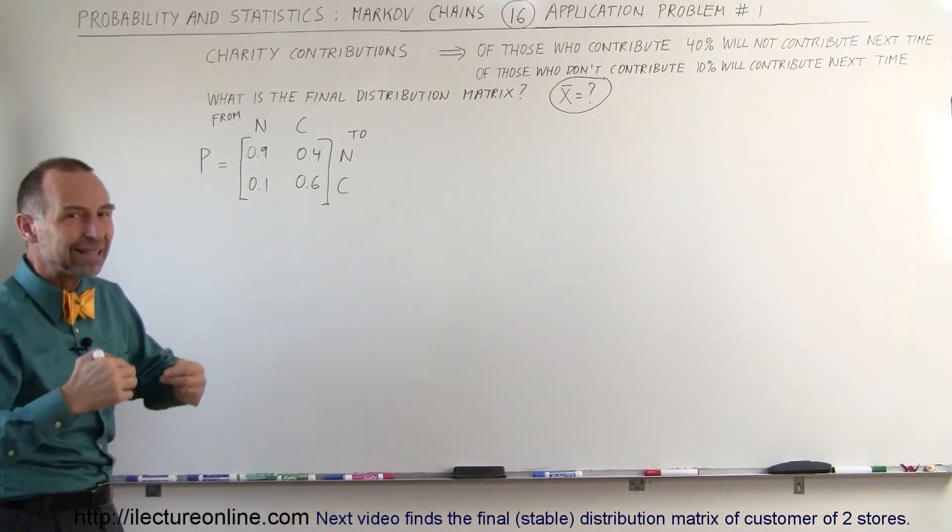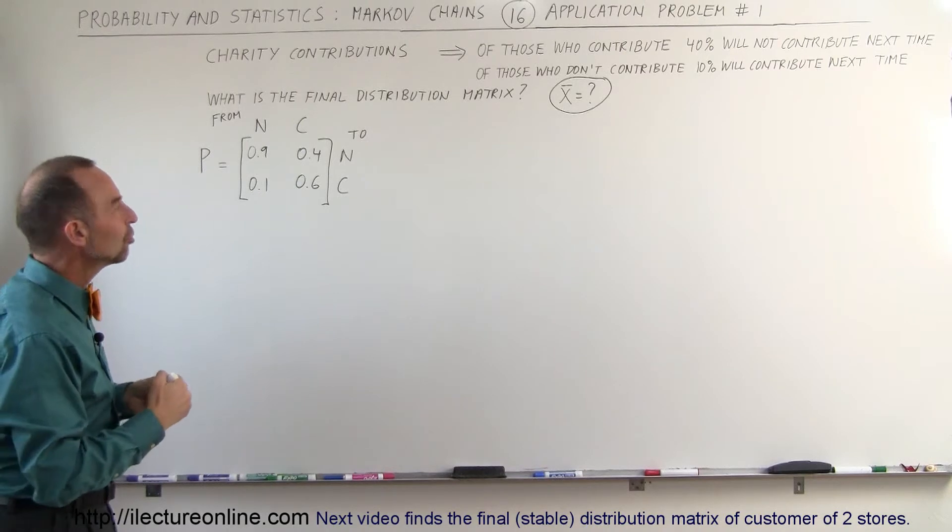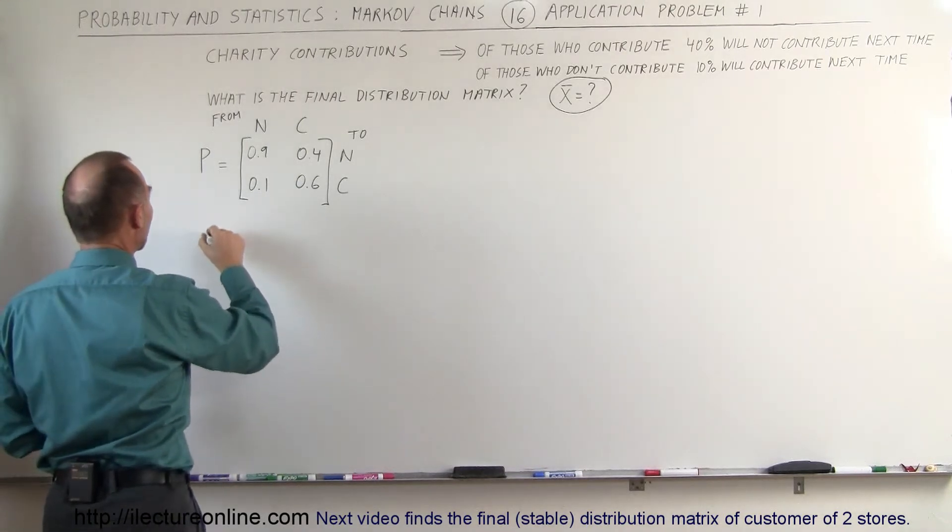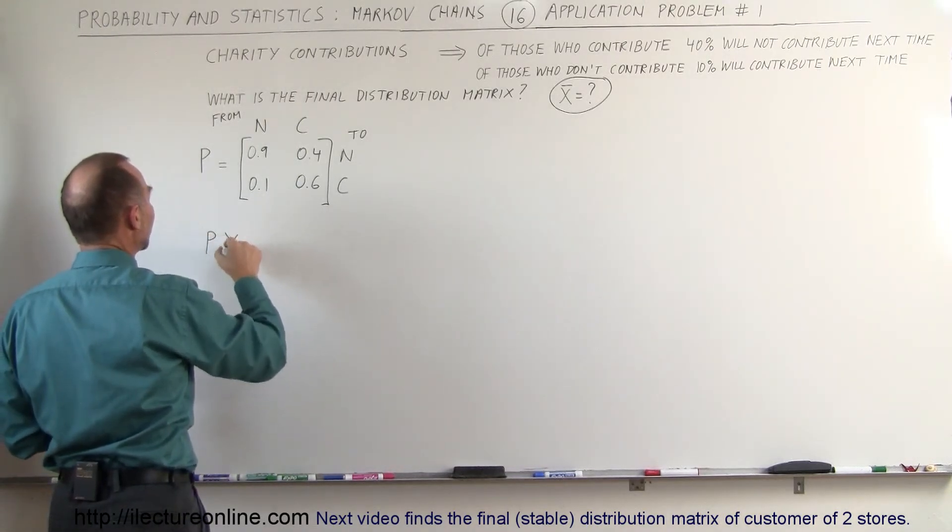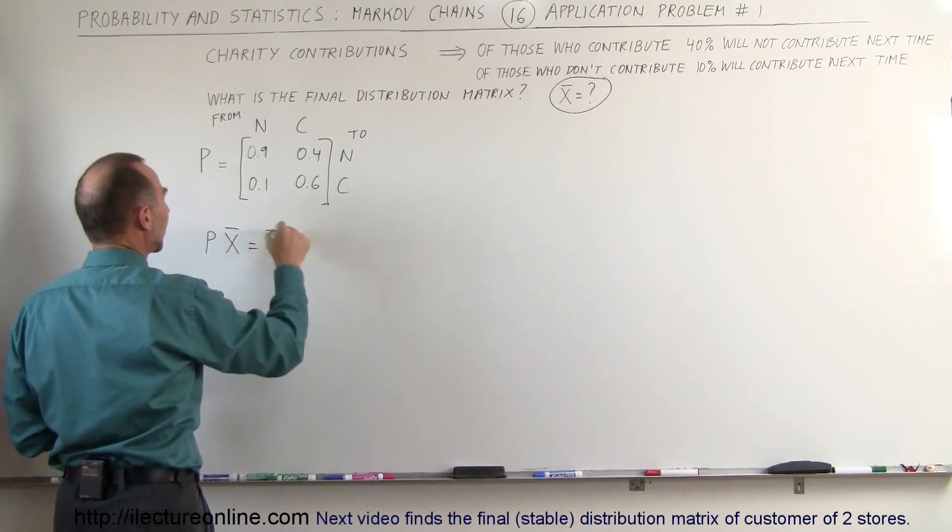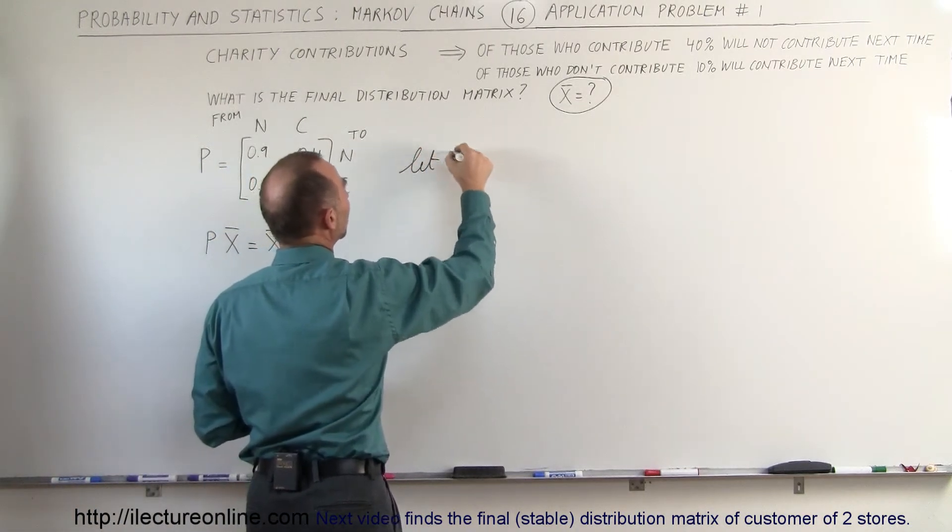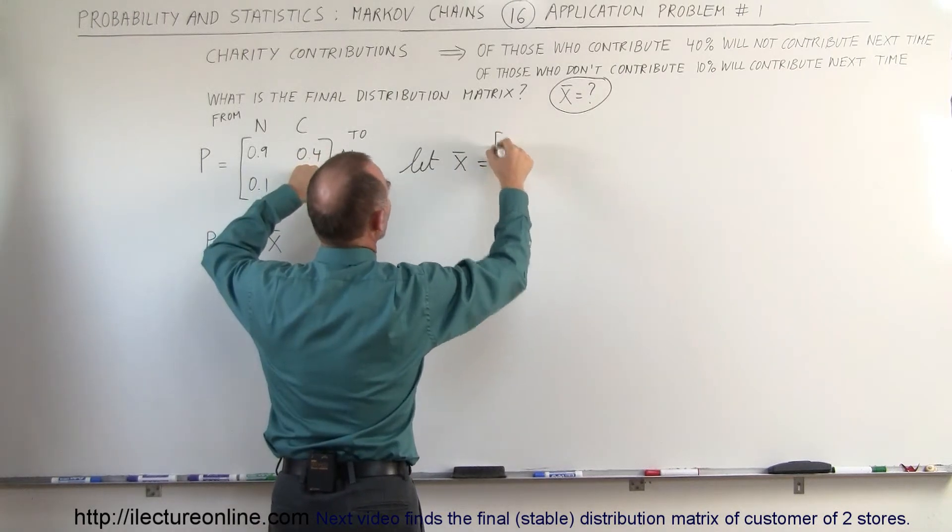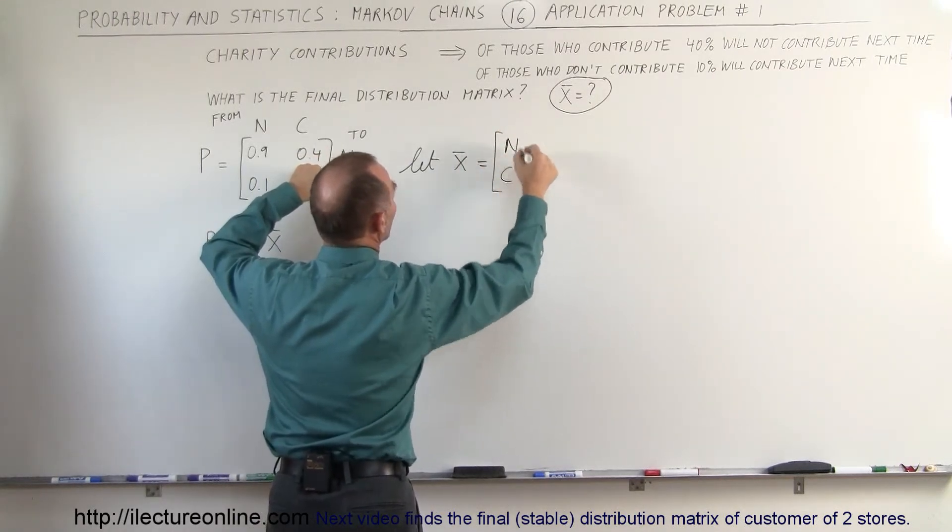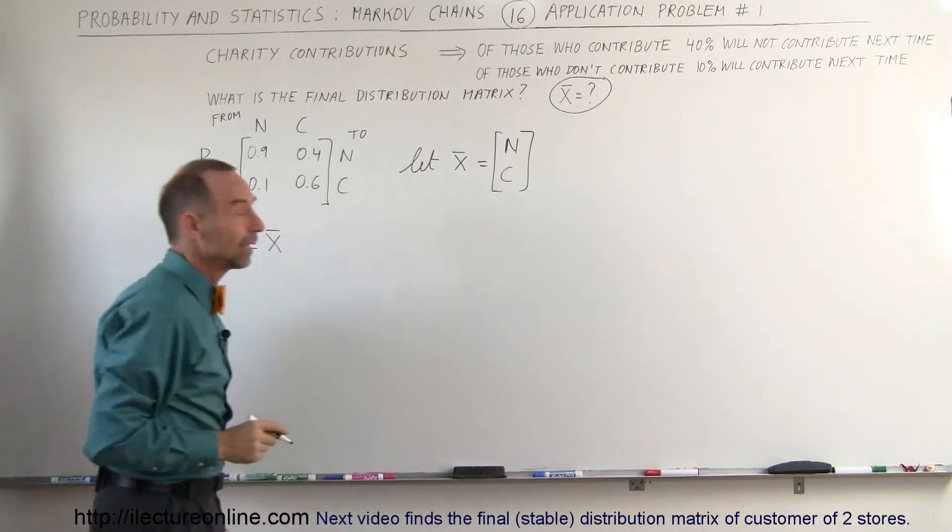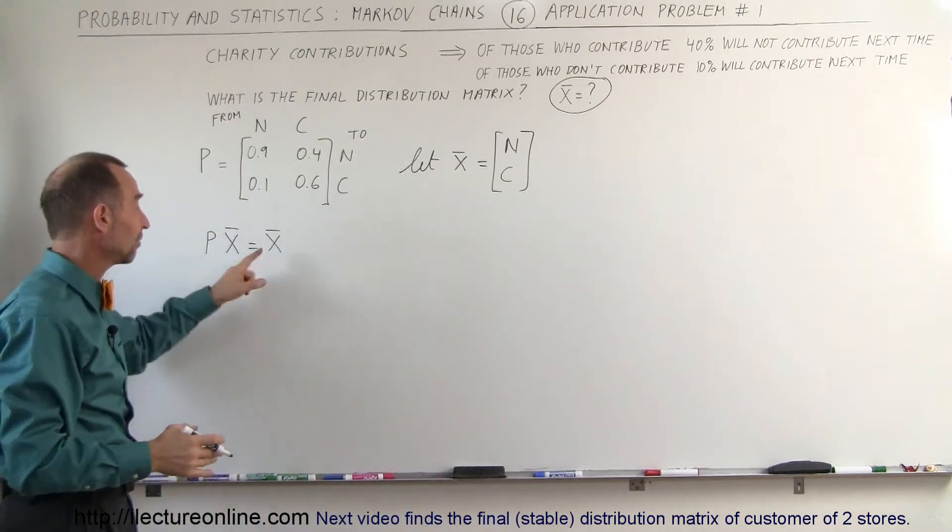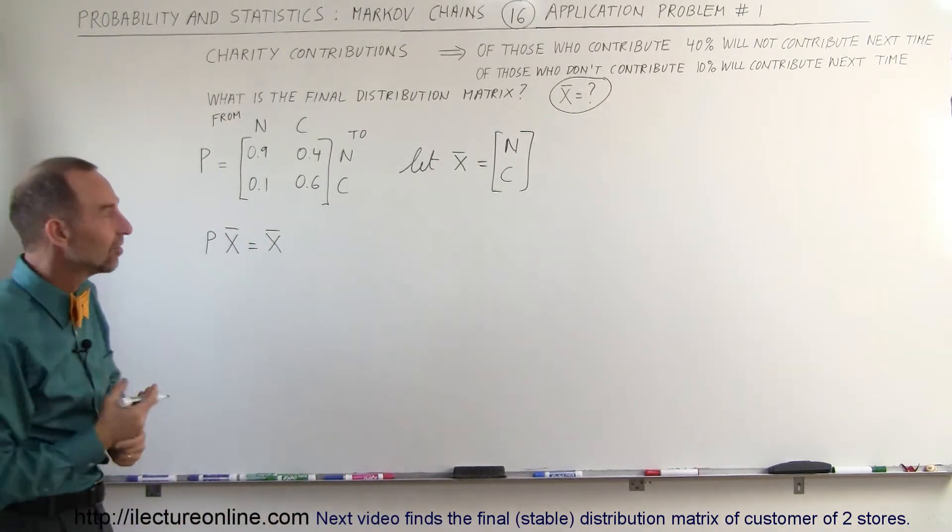We know to find the final stable distribution matrix, we know that when we multiply the probability matrix by the stable matrix, we should get back the stable matrix. And in this case, we're going to let the stable matrix equal the not contributing and the contributing states. And that would then be the stable states, and we have to find out what those stable N and C states are.